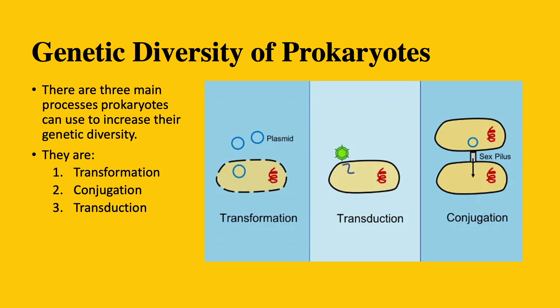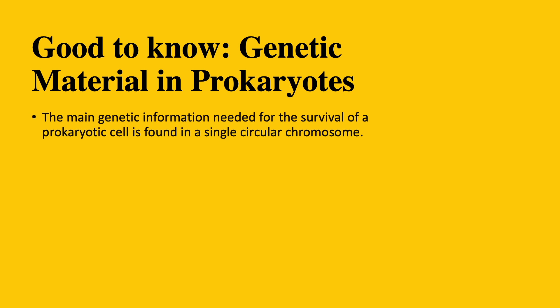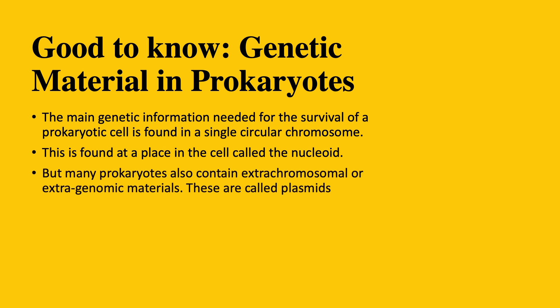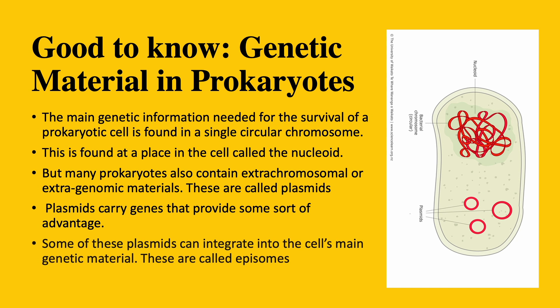This is when genetic recombination of prokaryotic cells becomes important. There are three main types: transformation, conjugation, and transduction. All three methods increase genetic diversity of prokaryotic cells. Before we explore each, it would be helpful to talk about the genetic materials found in prokaryotic cells, so here is a brief rundown of everything helpful to know in order to understand the three processes.